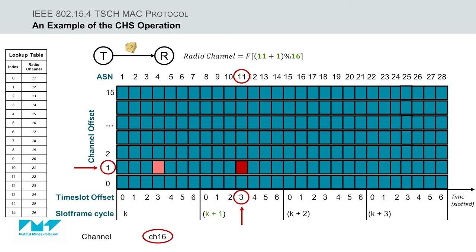Thus, we have 11 plus 1 equals 12, then 12 modulo 16 results to 12. As a result, node T is going to transmit over the radio channel 23, according to the lookup table, where the value 12 indicates the radio channel 23.